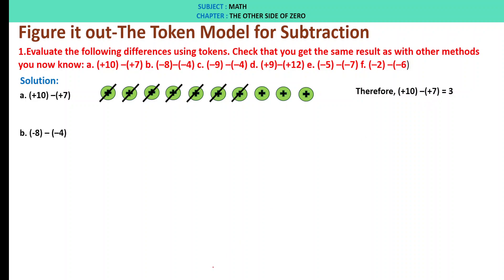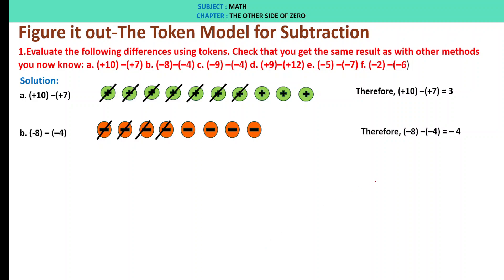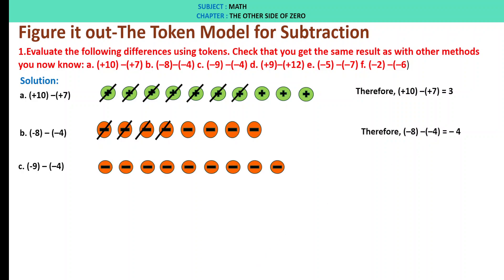B: minus 8 minus of minus 4. We have minus 8 tokens; we remove minus 4. Therefore, we are left with minus 4. Therefore, minus 8 minus of minus 4 is minus 4. C: minus 9 minus of minus 4. We have 9 minus tokens and subtract 4 from them. We are left with minus 5 tokens — counting 1, 2, 3, 4, 5. Therefore, minus 9 minus of minus 4 is minus 5.